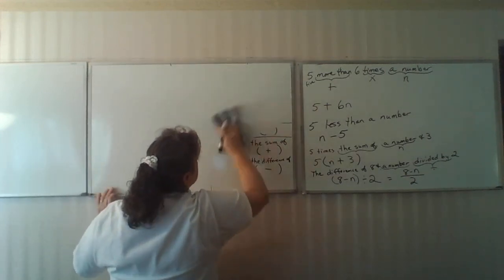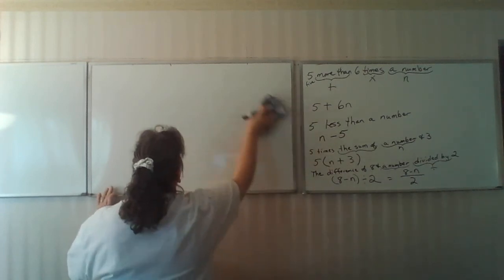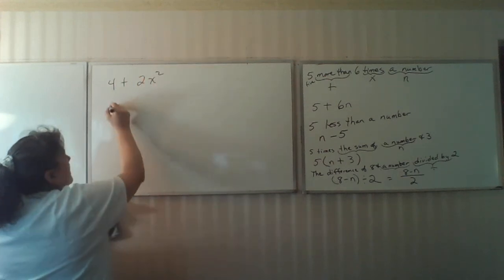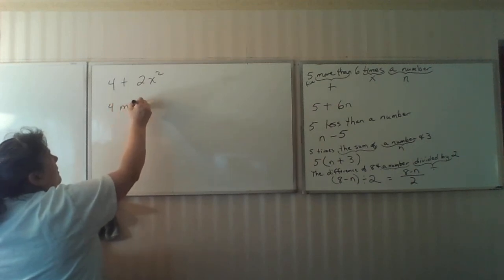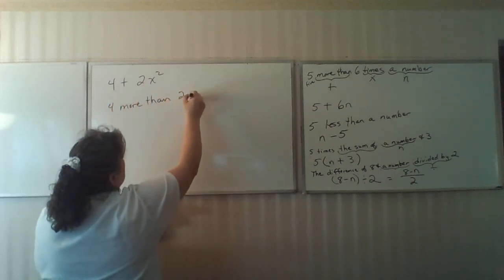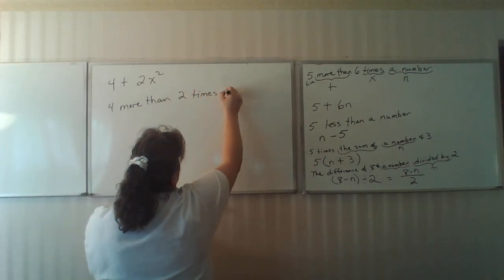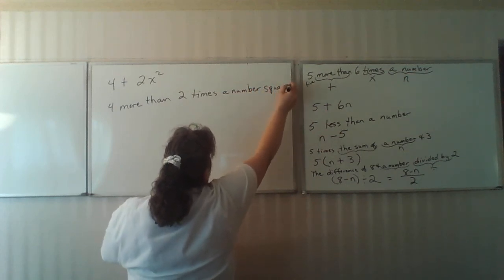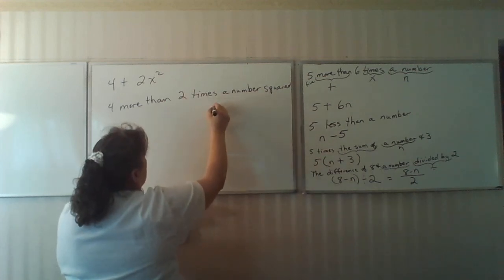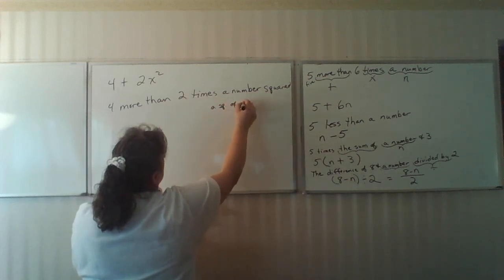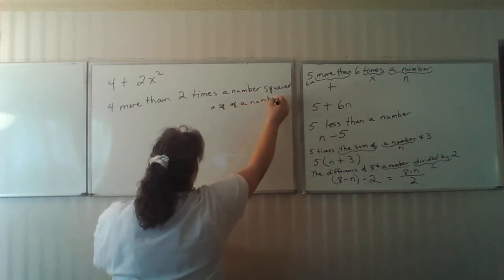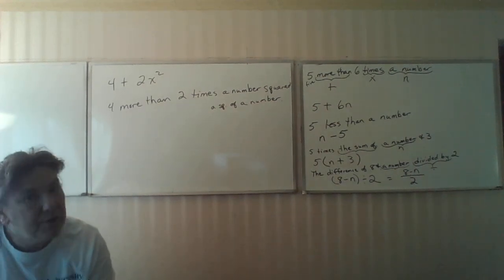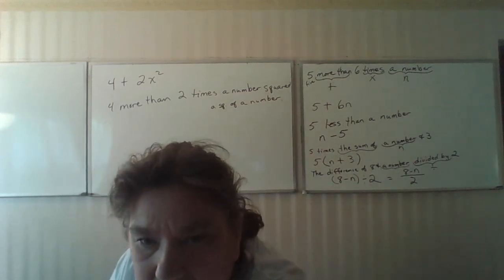The other thing they might ask you to do is take the numbers and write it in words. If I have four plus two x squared, this would be four more than two times a number squared, or you could say two times the square of a number. Both are correct. That gives you the other aspect. From there, we're going to go on to solving equations.